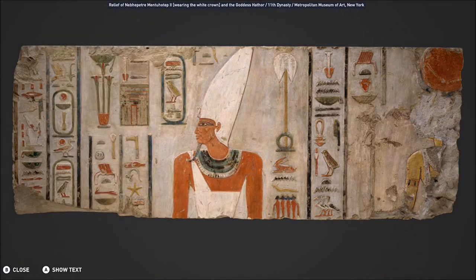Here we see a rock relief of King Nebepetre Mentuhotep II. The name Nebepetre means 'Lord of the Rudder of Re,' and Mentuhotep means 'the son of Re.' So who was this guy?